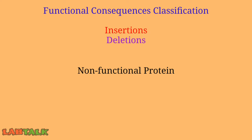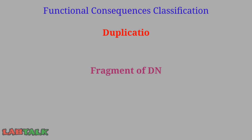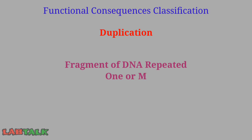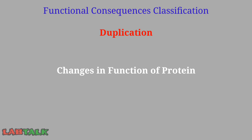Duplication consists of a fragment of DNA that has been repeated abnormally one or more times. This type of mutation may change the function of the resulting protein.